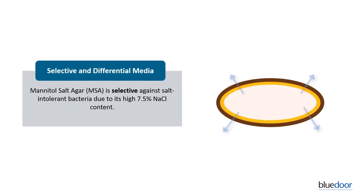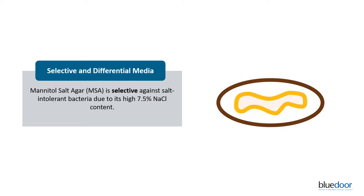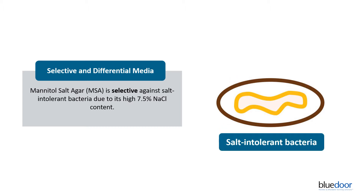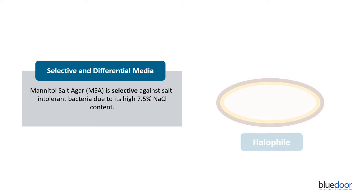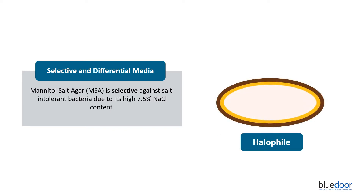These hypertonic conditions draw water out of the cell, causing the plasma membrane to pull away from the cell wall and plasmolyze. These conditions inhibit the growth of salt-intolerant bacteria. However, bacteria termed halophiles are able to tolerate these high salt conditions and continue to reproduce. An example of a common salt-tolerant halophile is the bacterium Staphylococcus.